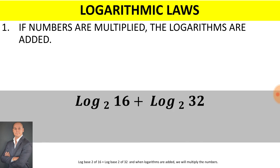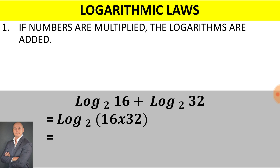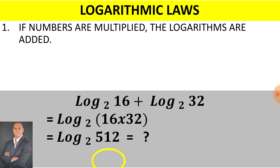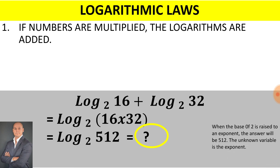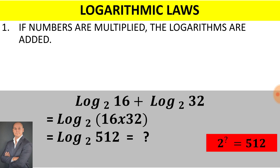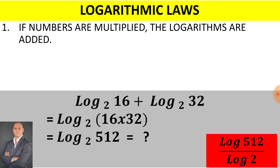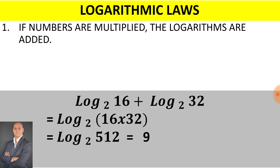For example: log base 2 of 16 plus log base 2 of 32. When logarithms are added, we multiply the numbers. 16 multiplied by 32 gives us 512. So we have log base 2 of 512 — the question is, what is the value of the exponent? When base 2 is raised to an exponent, the answer will be 512. Using a calculator, log 512 divided by log 2 gives an answer of 9.